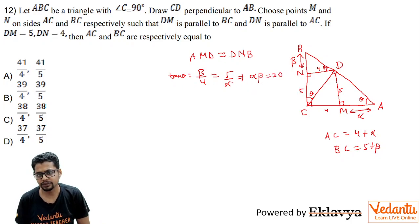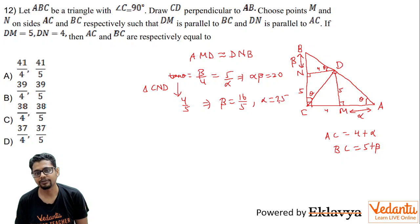In fact, you need not even think this way. Because if you consider triangle CND, tan theta is 4 by 5. So by this, you can clearly see that beta is 16 by 5 and alpha is 25 by 4.